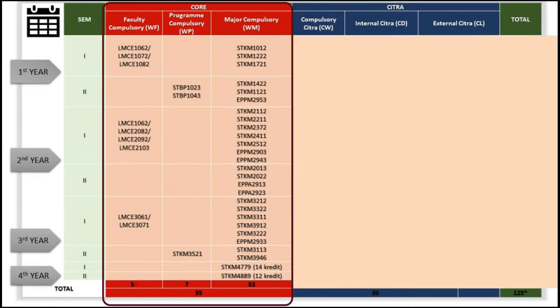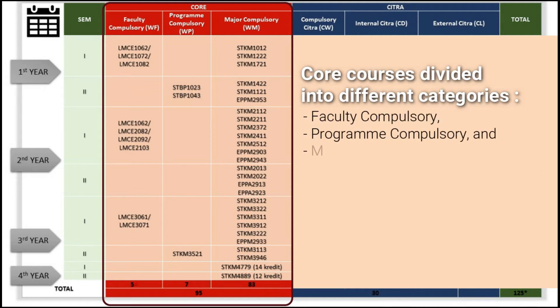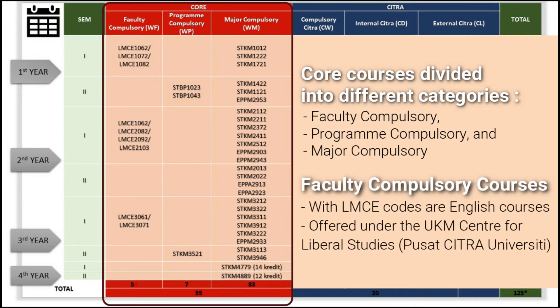These columns show the core courses, which are divided into different categories: Faculty Compulsory, Program Compulsory, and Major Compulsory Courses. Faculty Compulsory Courses with LMCE codes are English courses offered under the UKM Center for Liberal Studies, Pusat Citra University.